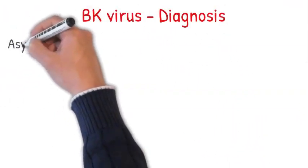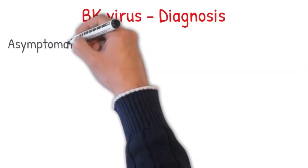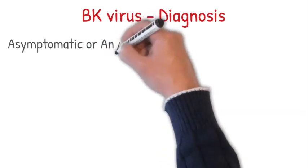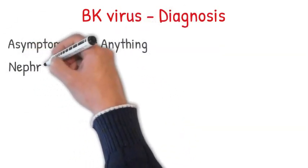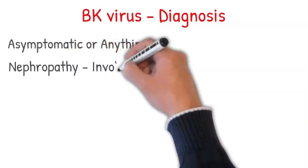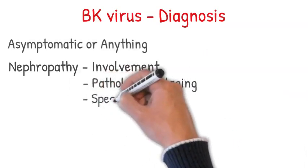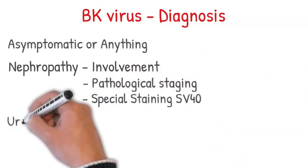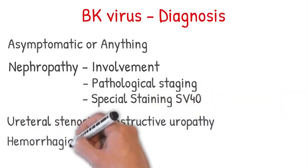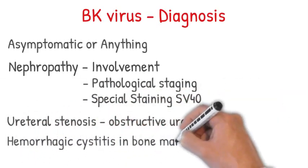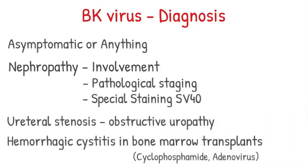In terms of diagnosis, once BK is activated it may be completely asymptomatic, or cause anything ranging from headache, fatigue, UTI, or respiratory tract symptoms. It may cause BK nephropathy — important to notice the tubular interstitial involvement, pathological staging, and the special staining. It may cause ureteral stenosis with subsequent obstructive uropathy. Also, it causes hemorrhagic cystitis with blood in urine and dysuria in bone marrow transplant recipients, exactly like cyclophosphamide and adenovirus.